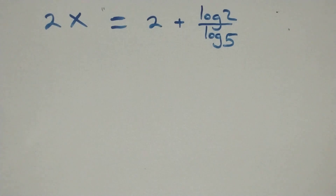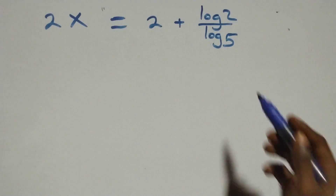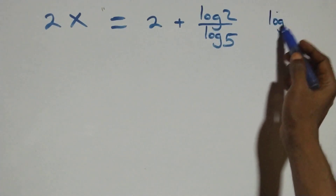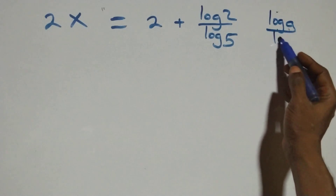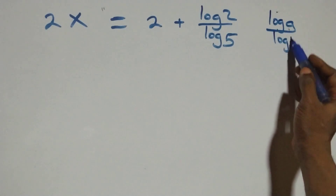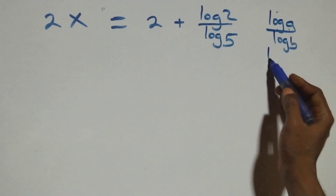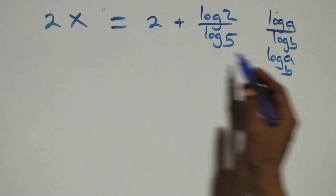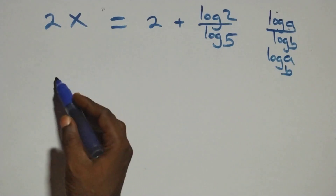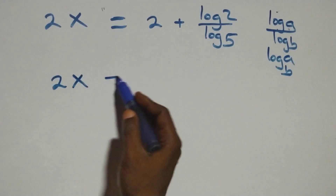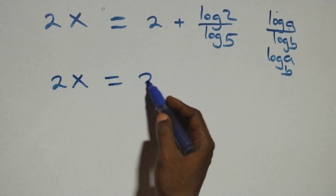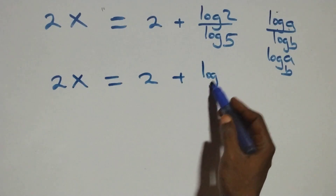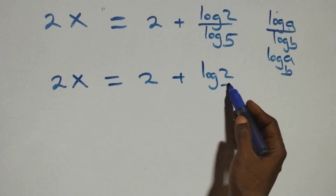Next step: we apply the change of base formula. When we have log A over log B, this is the same thing as log A to base B. So what we have becomes 2x equals 2 plus log 2 base 5.